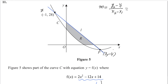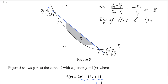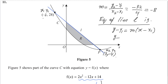Let (-1, 28) be (x₁, y₁) and (3, -4) be (x₂, y₂). Then y₂ - y₁ = -4 - 28 = -32, and x₂ - x₁ = 3 - (-1) = 4. So the gradient is -32 / 4 = -8. You can choose either point to find the equation of line L. The standard form is y - y₁ = m(x - x₁).